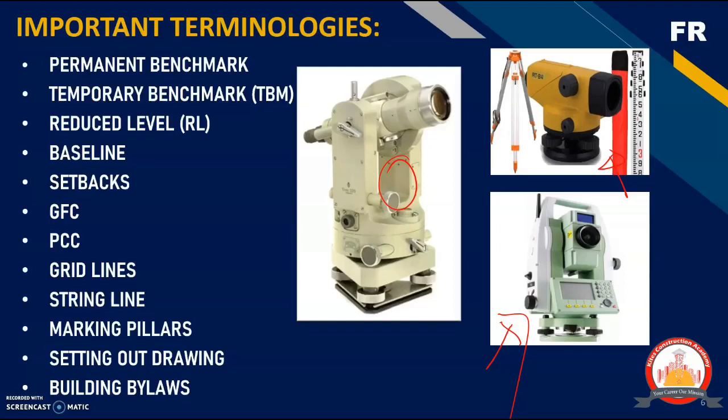When you are using the auto level, it is basically used to check the elevations and also to check the level of your formwork and the level of the excavations done. The total station is used for all purposes like setting out of the drawing, elevation purposes, and angles — it is an electronic-based instrument used for the marking activity.